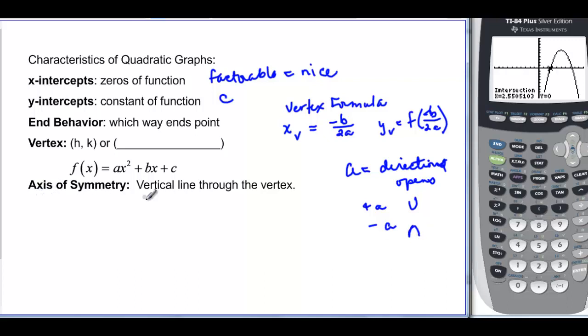And then finally, we have the axis of symmetry, which is a vertical line through the vertex. Well, if it's a vertical line, that means it's an x equals equation. And it goes through the vertex, so it must be equal to the x value of our vertex. So it's equal to either -b/2a or h, whichever one you happen to know.